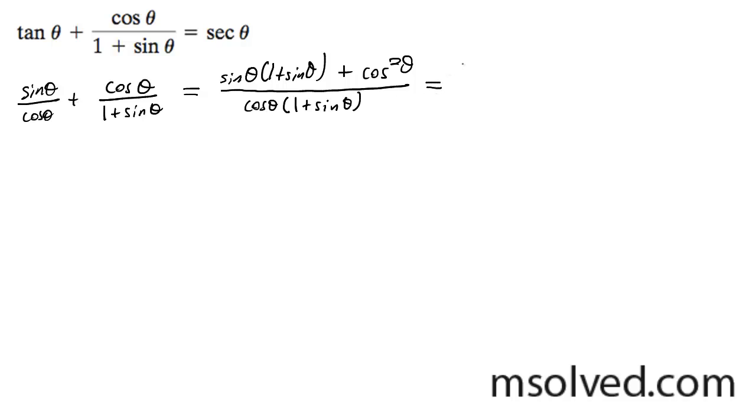And what we can do here, well actually I need to multiply this out. Sine theta plus sine squared theta plus cosine squared theta all over cosine theta, one plus sine theta. I'll leave the bottom factored out.